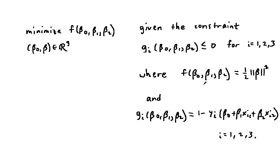Our convex optimization problem takes the form: minimize f of beta0, beta1, beta2, where beta0, beta lies in R3, given the constraint g sub i of beta0, beta1, beta2 is less than or equal to 0 for i equals 1, 2, and 3, where f of beta0, beta1, beta2 is one-half the norm of beta squared, and g sub i of beta0, beta1, beta2 is this expression here, for i equals 1, 2, and 3.